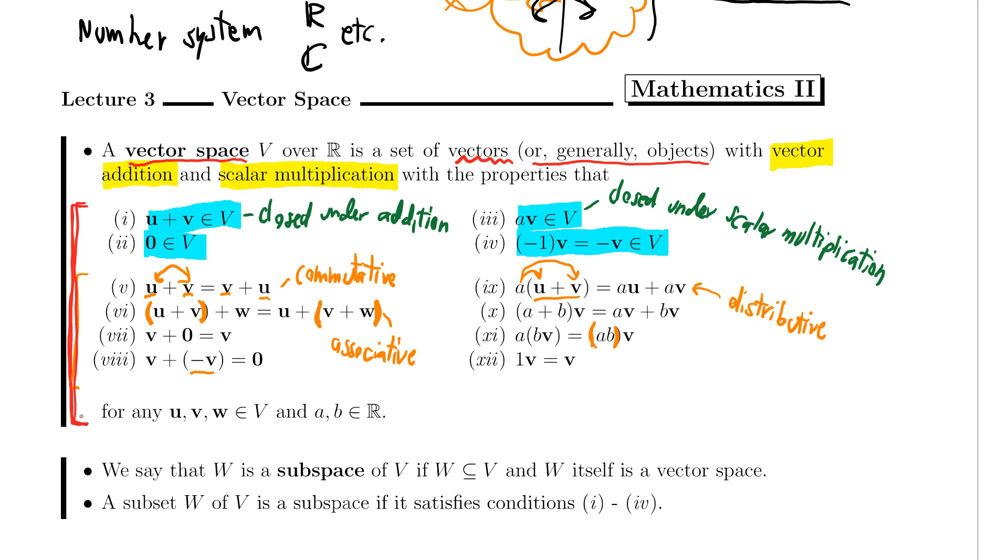And like I said before, we'll see later in the example that the first four is going to be the more important one. One thing that I would also like to point out is that for something to be a vector space, I only need vector addition, so I need to be able to add two vectors. And I need scalar multiplication, so I need to be able to multiply a vector with a scalar.